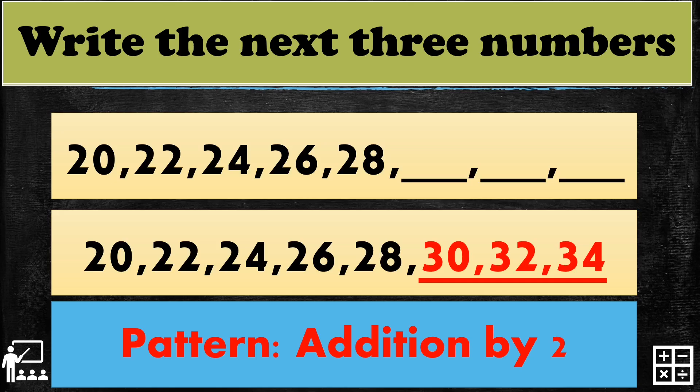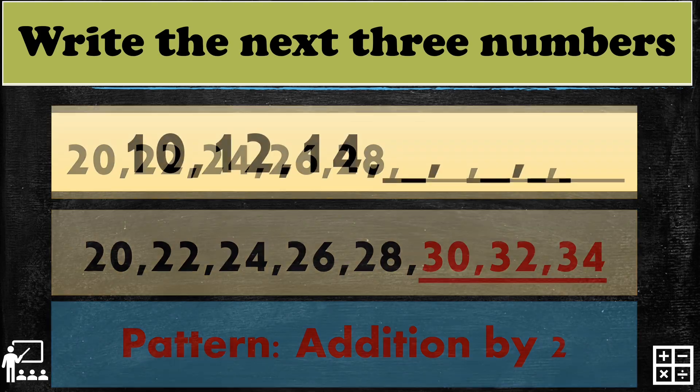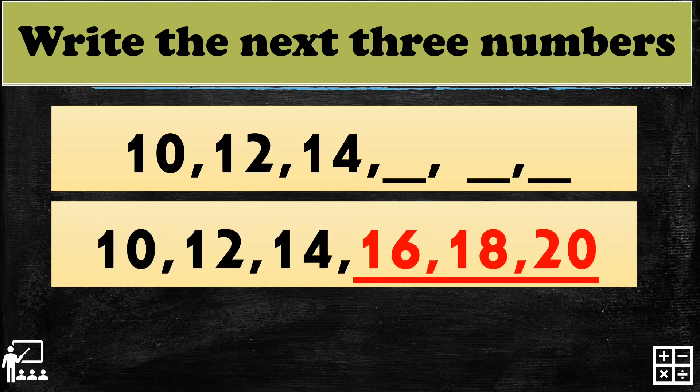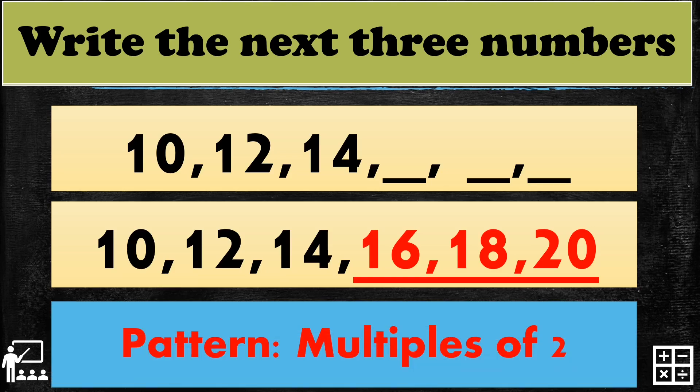For the third activity: 10, 12, 14. What are the three next missing numbers in the sequence? Very good — it's 16, 18, and 20. The pattern is multiples of 2, or addition by 2.